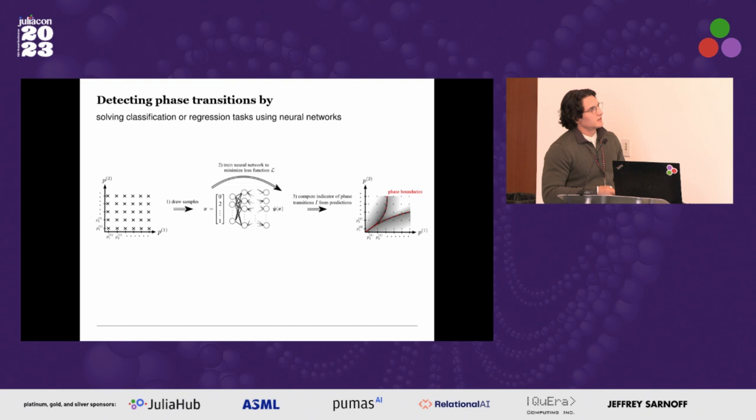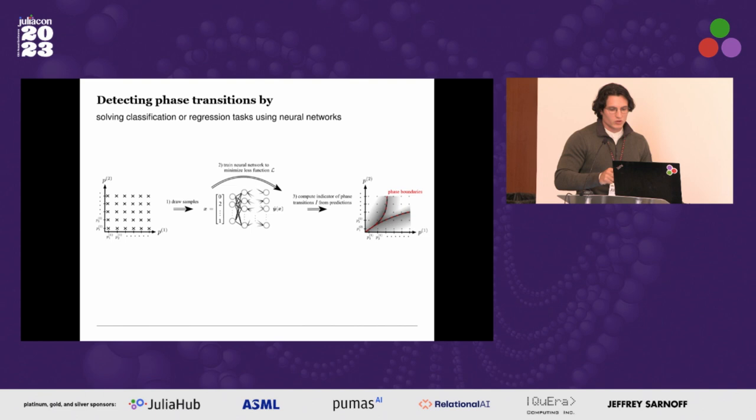Different methods differ in the choice of loss function and how the indicator is computed from predictions. These methods can also be extended to physical systems featuring multiple tuning parameters — in that case the output of the neural network is typically multi-dimensional and we look for local maxima in the indicator map, shown in black, which should highlight phase boundaries.